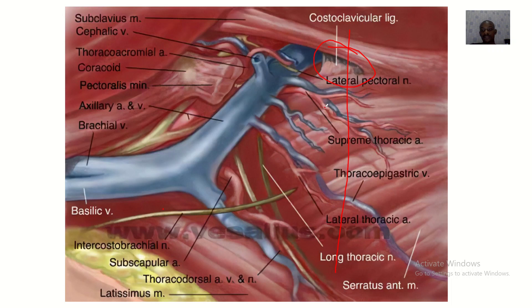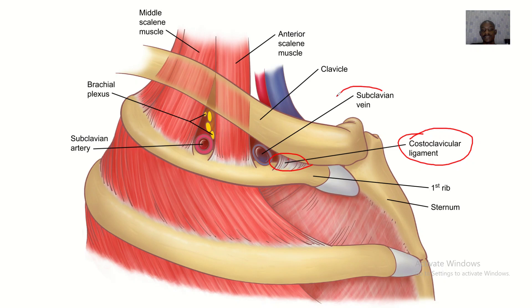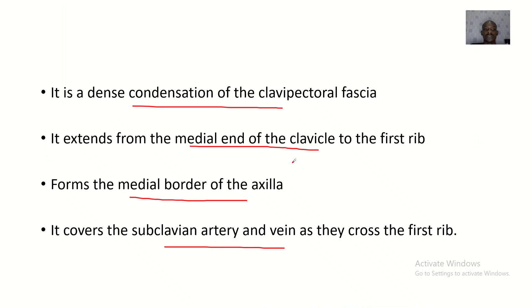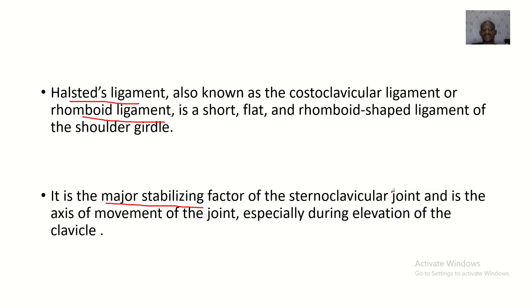The subclavian artery and vein are not labeled here, but right here you can see the subclavian vein and subclavian artery — the costoclavicular ligament covers them. That's it about the Halstead ligament, also known as the costoclavicular ligament or rhomboid ligament. I hope you enjoyed this tutorial — see you in the next one!